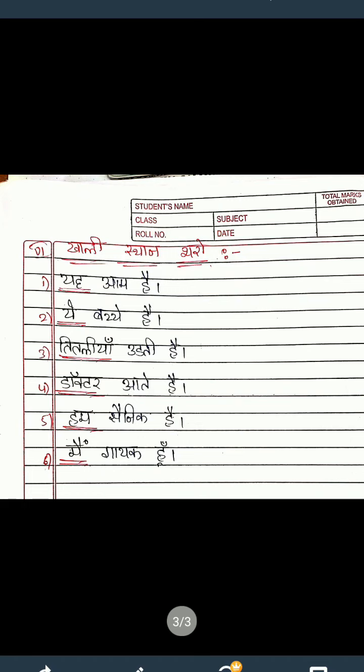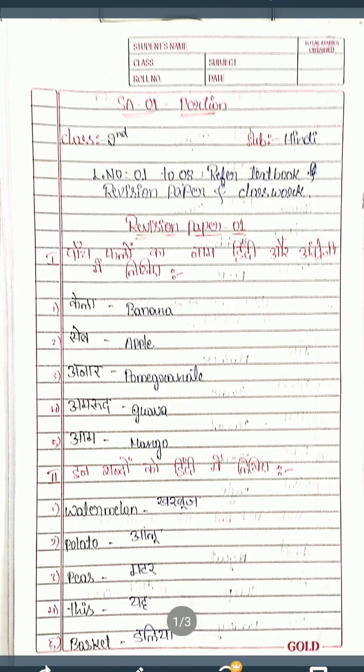Okay children, so this is revision paper one. Once again I will read all questions — listen. First question: write five fruits names in Hindi and English — kela/banana, seb/apple, anar/pomegranate, amrood/guava, aam/mango. Second question: write the Hindi words — watermelon/karbuj, potato/aloo, peas/matar, this/yah, basket/deli.